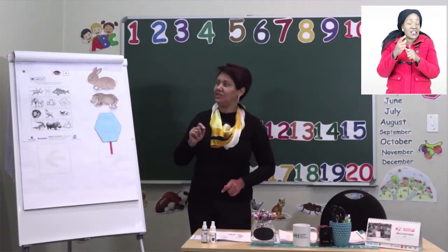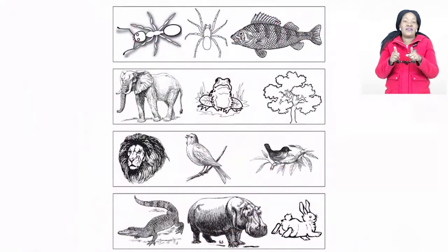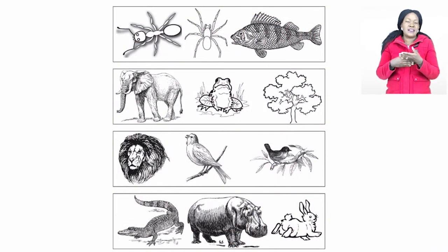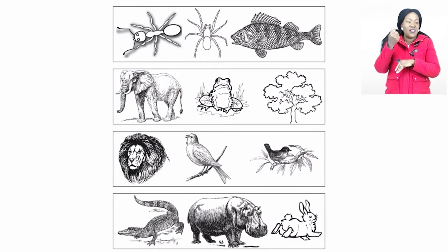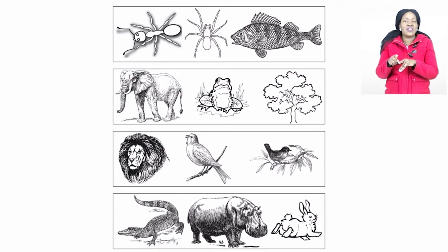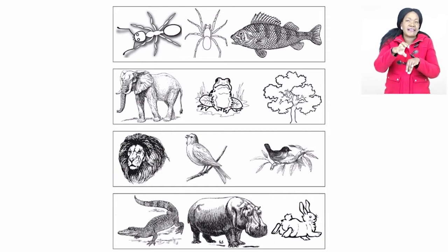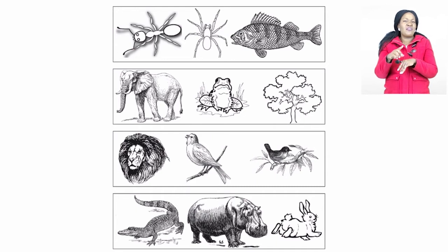Now let's turn to the page again. Let's look at the insects — both have six legs, and the fish has fins. Which one does not fit? At the second one, if you take a good look, two of them are animals: one an amphibian, and the other is a plant. Which one would not fit there? A tree, actually.